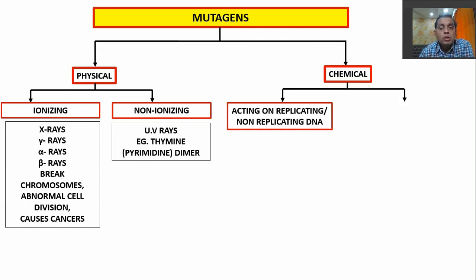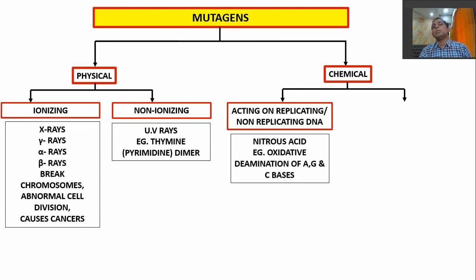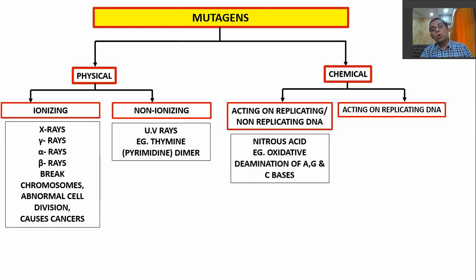Moving on to chemical mutagens — chemical mutagens are also of two types. One type acts on DNA during both replication and non-replication states, while the other type acts specifically on replicating DNA.